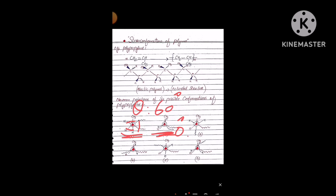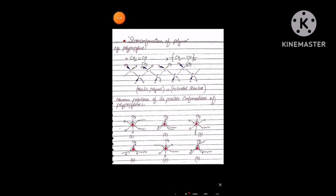In the third case, rotating again by 60 degrees gives another conformer. In the fourth case another eclipsed structure appears. Conformers 1, 3, and 5 are staggered forms where substituents are at maximum distance. Conformers where the dihedral angle θ is approximately zero are eclipsed structures. The most stable structure among all six is structure number five.